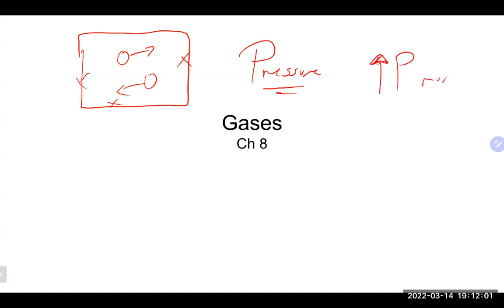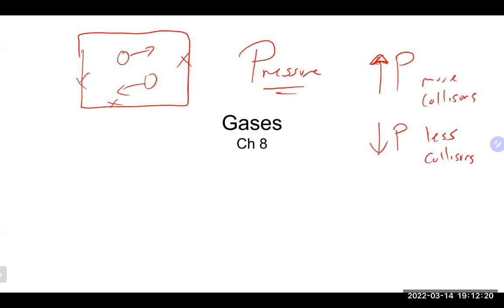More collisions means higher pressure, and obviously less collisions means a drop in pressure. There are some formulas in this chapter that relate these things — pressure, temperature, and volume — which are three common variables that we talk about when we are dealing with gases.